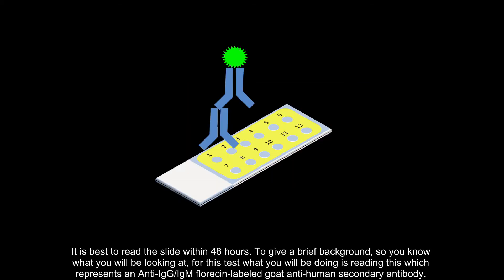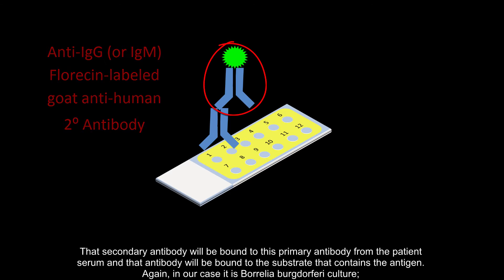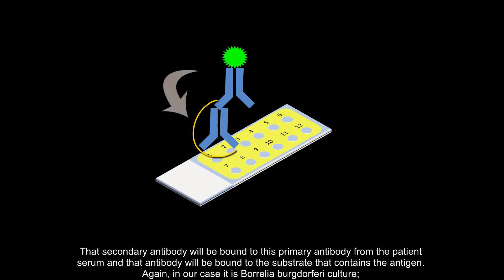To give a brief background so you know what you will be looking at, for this test what you will be doing is reading an anti-IgG or IgM fluorescent labeled goat anti-human secondary antibody. That secondary antibody will be bound to the primary antibody from the patient serum and that antibody will be bound to the substrate that contains the antigen. In our case it is Borrelia burgdorferi culture.